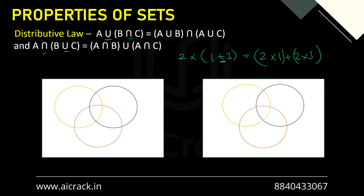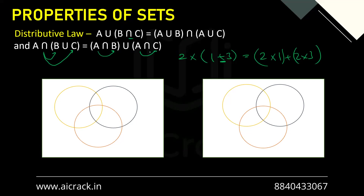The union is being distributed onto the sets — so A union (B intersection C) equals (A union B) intersection (A union C). The union distributes, giving A union B and A union C, with intersection in the middle. We can do the reverse as well: A intersection (B union C) equals (A intersection B) union (A intersection C). Here the intersection distributes over B and C, giving A intersection B and A intersection C, with union in the middle.